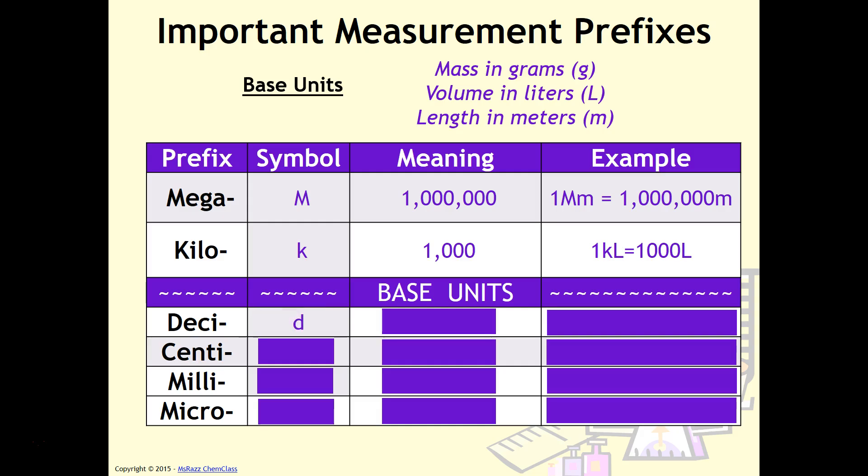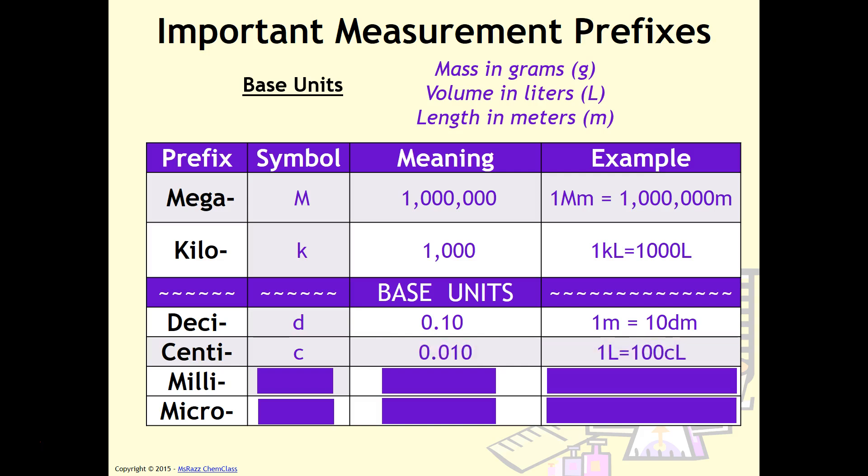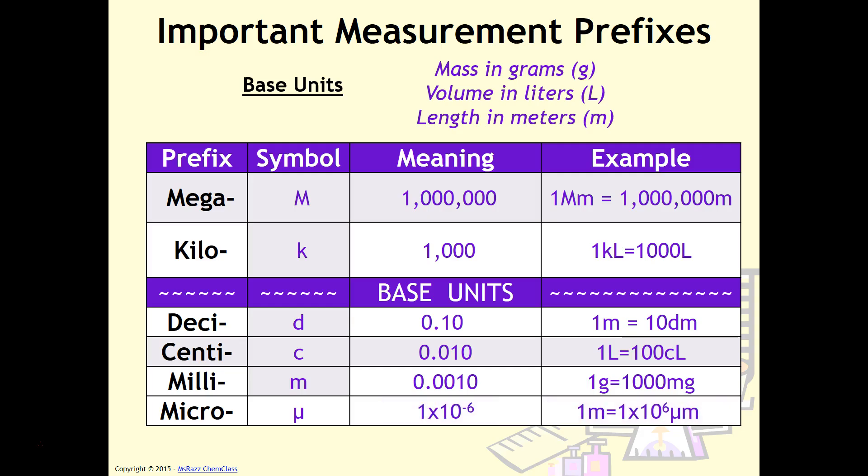For deci, we're now getting into the smaller prefixes. Deci means tenth. So for example, one meter equals ten decimeters. Centi has the symbol lowercase c, meaning is hundredth. One liter equals a hundred centiliters. Milli has the symbol lowercase m. The base unit is thousandth. And so one gram equals a thousand milligrams. And micro has a fancy symbol that looks like a U with a little hook in front. That is the Greek symbol called mu. And so that is millionth. For example, one meter equals one times ten to the sixth micrometers.